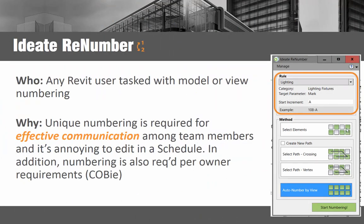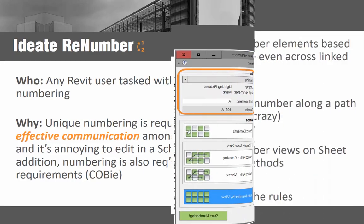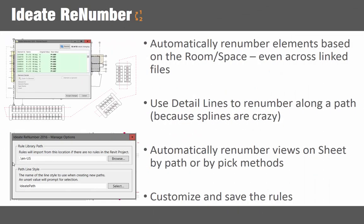The Revit team is likely to be spending time on a variety of tedious numbering tasks throughout the project. Examples may include doors, rooms, equipment, and don't forget the sheet detail numbers. Liberate yourself from tedium and improve project coordination with Ideate Renumber. Ideate Renumber has easy-to-use pre-built rules for renumbering common elements, but it also allows for complete customization.